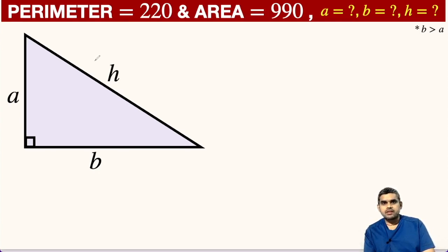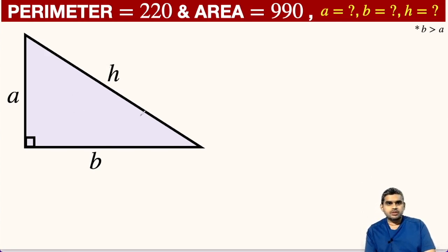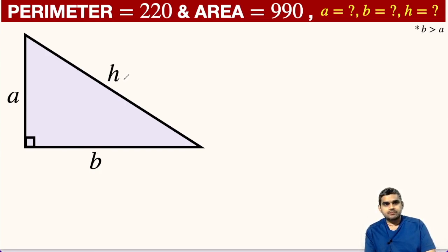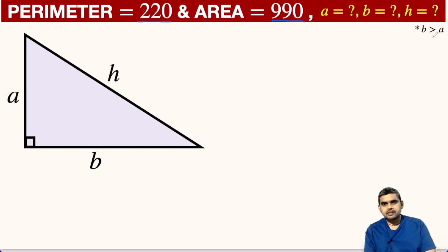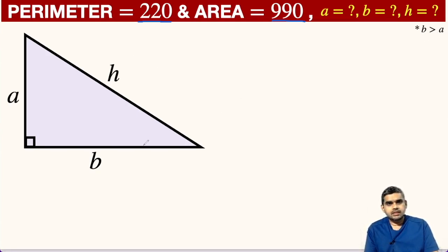Welcome to my YouTube channel. Once again, I am back with another interesting question. So in the figure shown, we have a right triangle. The three sides of this right triangle are given as B, A, and the hypotenuse H. The perimeter of this right triangle is given as 220 units and its area is 990 units. We have to find the dimensions of this right triangle. Also, there is a star mark here which says that side B is greater than side A. So let us start solving this question.